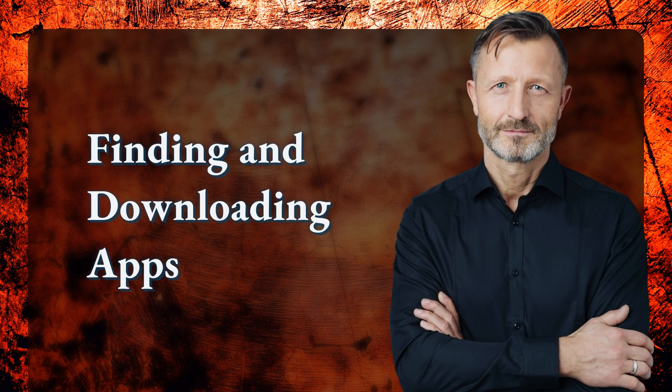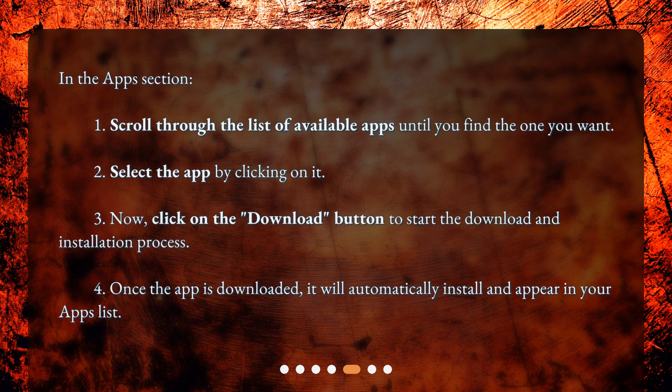Finding and downloading apps. In the Apps section: 1. Scroll through the list of available apps until you find the one you want. 2. Select the app by clicking on it. 3. Click on the Download button to start the download and installation process. 4. Once the app is downloaded, it will automatically install and appear in your apps list.